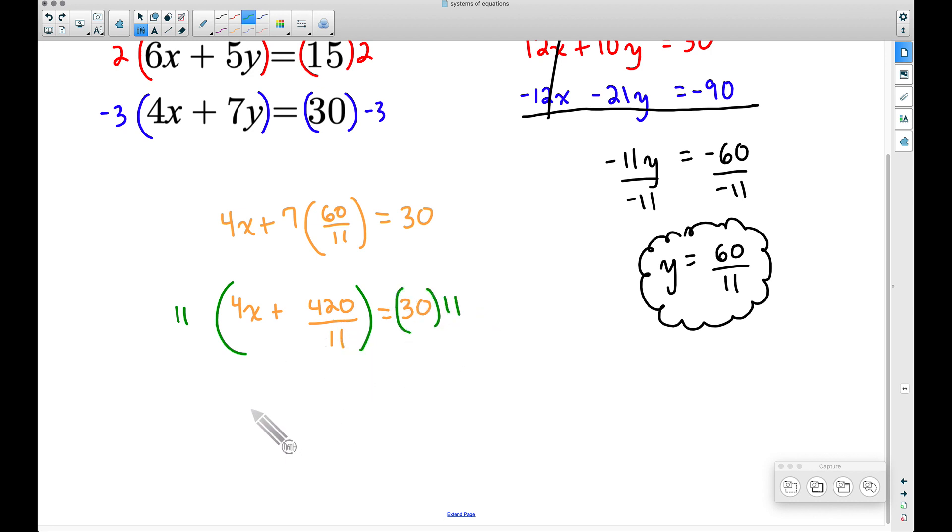11 times 4x is 44x, and instead of you wasting time and taking 11 times 420 then turning right back around and dividing by 11, the whole point of us multiplying by a common denominator, this 11 is going to go away. 11 times 420 divided by 11 is still going to be 420, so we have plus 420.